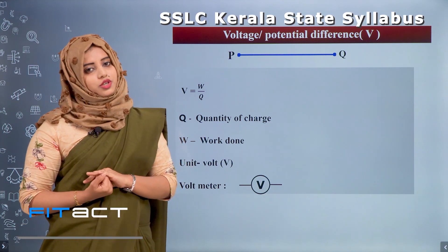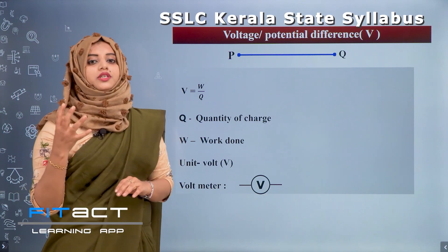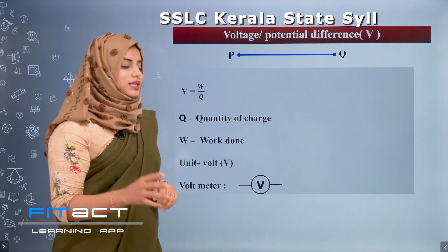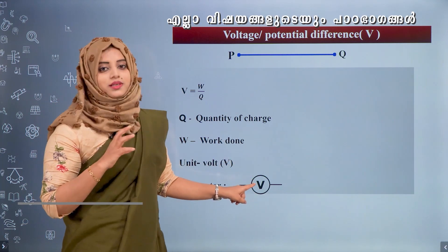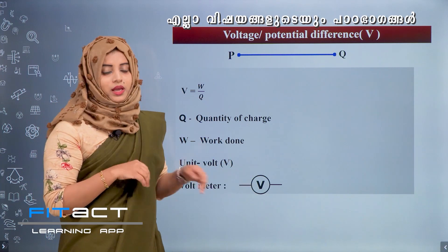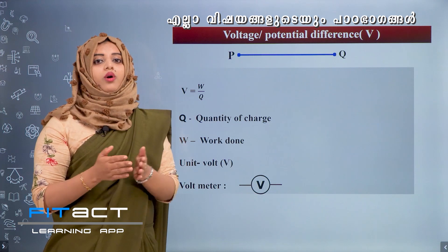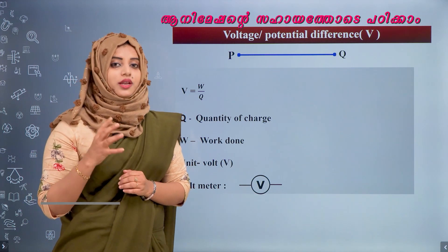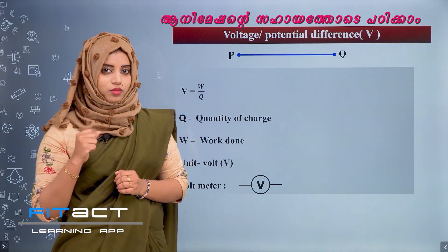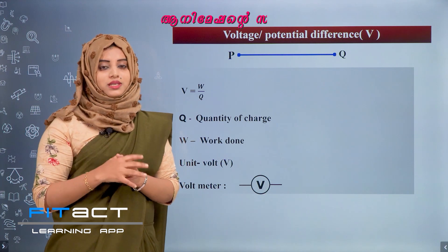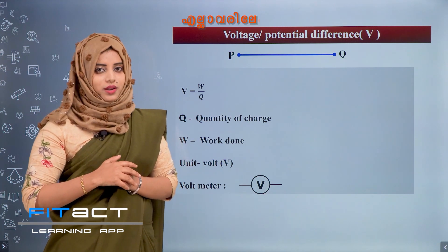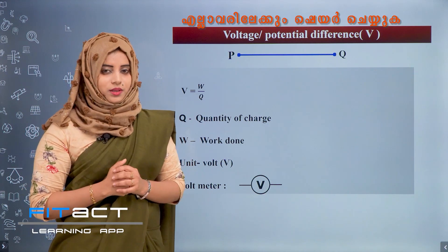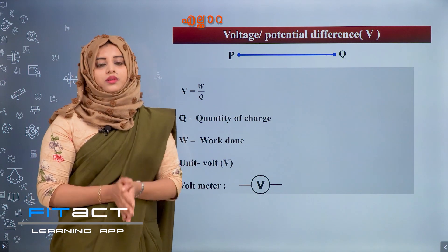A Voltmeter is used to measure potential difference in a circuit, indicated by a specific symbol. A Battery or EMF source is used to maintain the potential difference in a circuit. The battery is the cell that we use to keep the potential difference maintained.